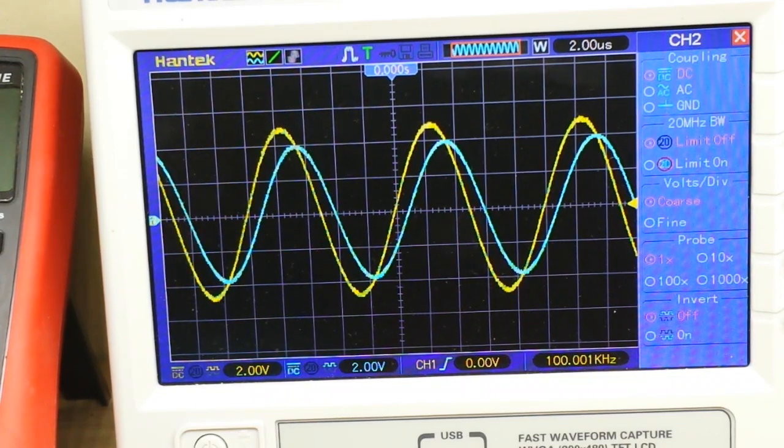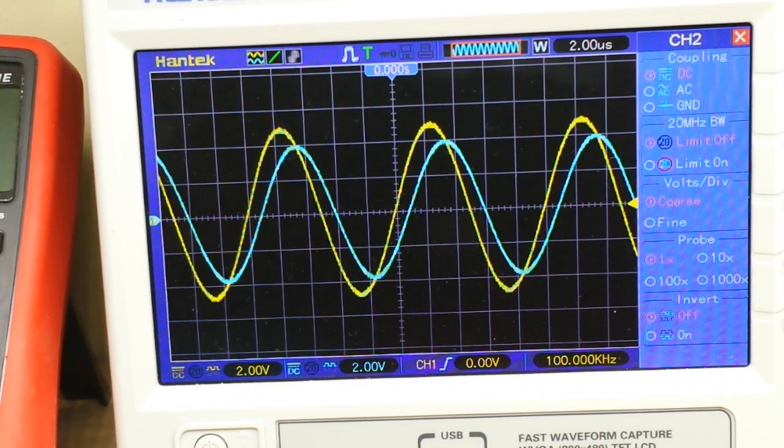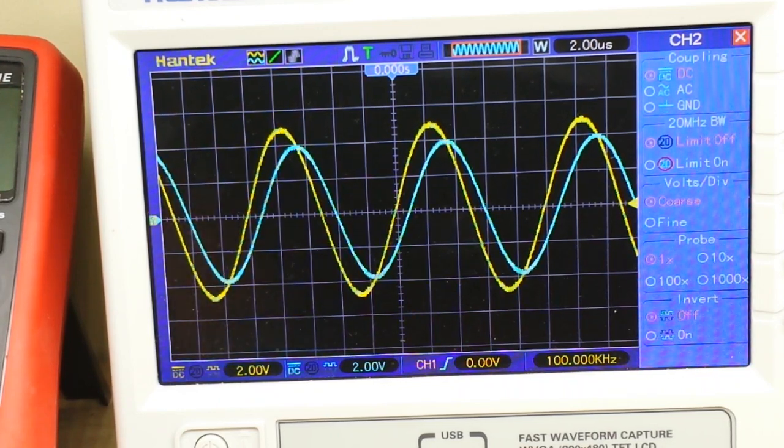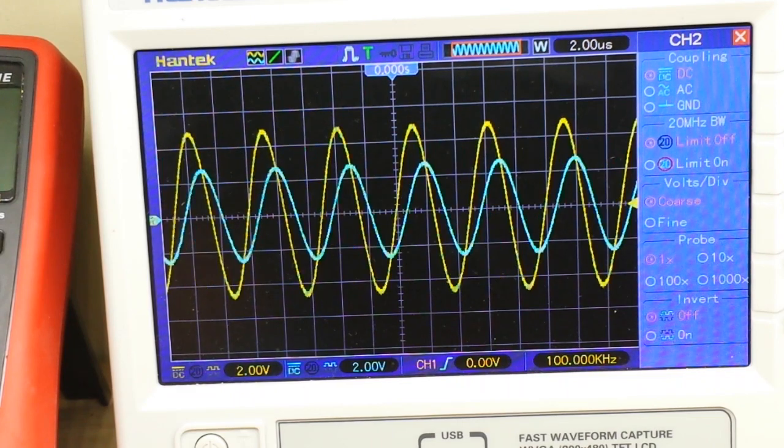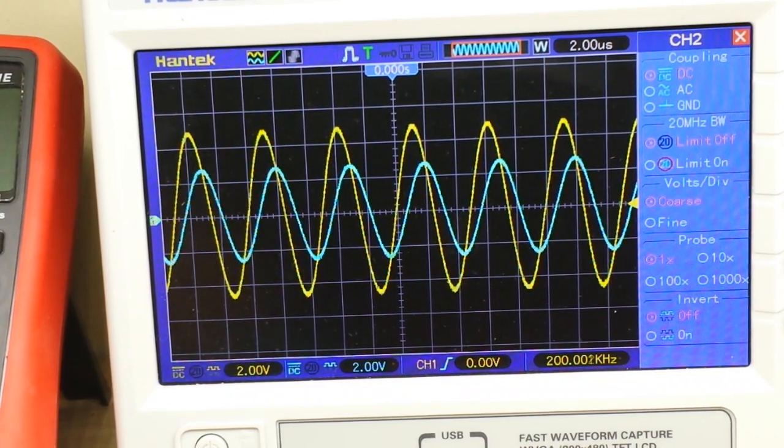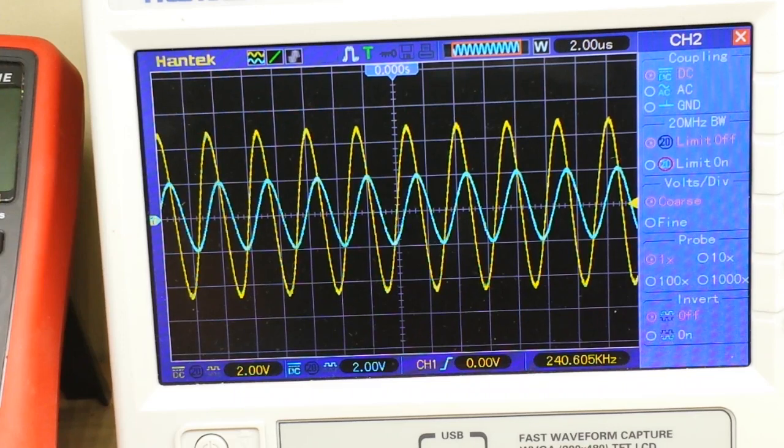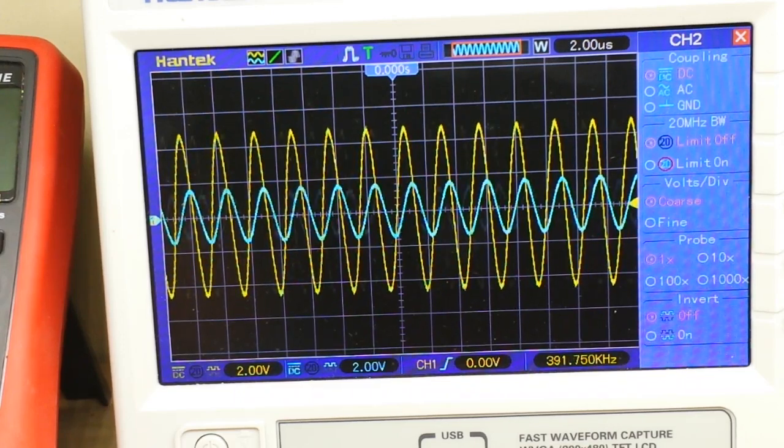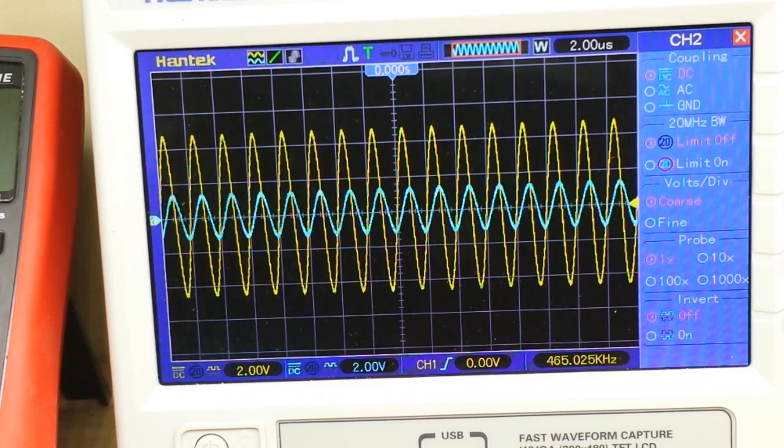But watch what happens as we increase the frequency to our attenuation point, which in this case is about 160 kilohertz. We're at 100 now. Let's go up to 200. Boom. Now, that signal is seriously attenuated by the low pass filter. And if we go higher, 300, 400, 500. You see as the frequency increases, less and less is passed of the signal.